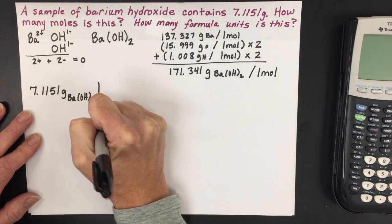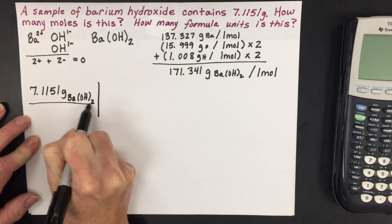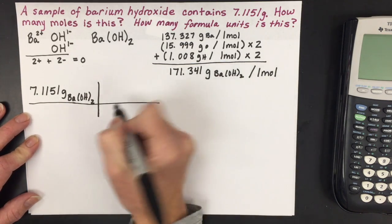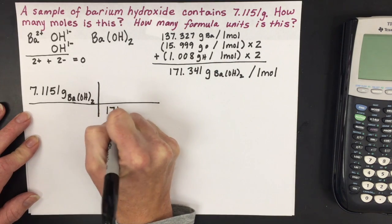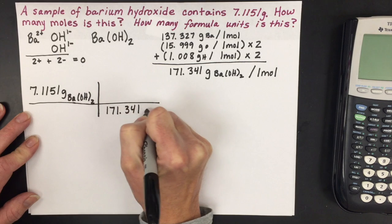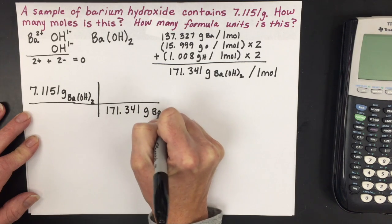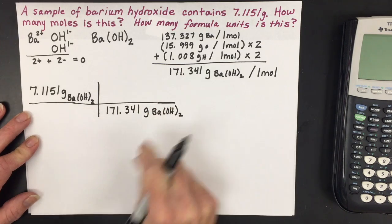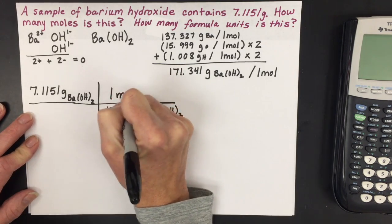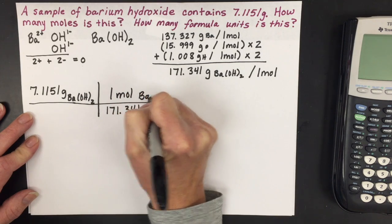We're going to convert that to moles by dividing by the molecular mass, 171.341 grams of barium hydroxide. When you do these calculations, you should show a number with a unit and a label, and that's for every one mole of barium hydroxide.